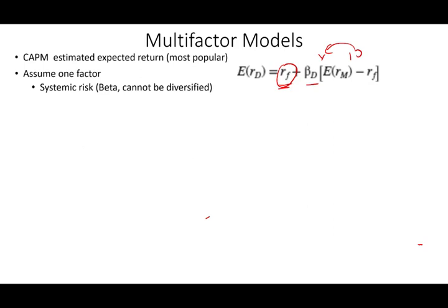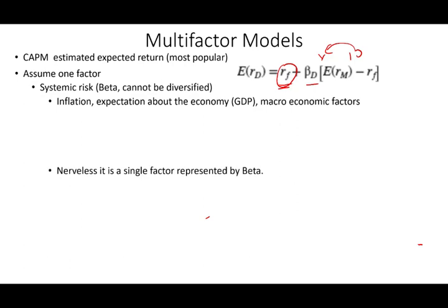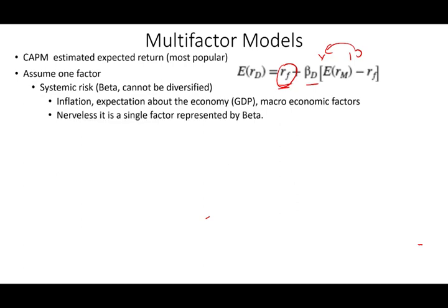Systematic risk includes everything — market risk encompasses inflation, expectations about the economy, GDP, and macroeconomic factors. Beta represents all the systematic risk. Nevertheless, it's only one factor. We can break down the factors — if we want, we could have two factors.